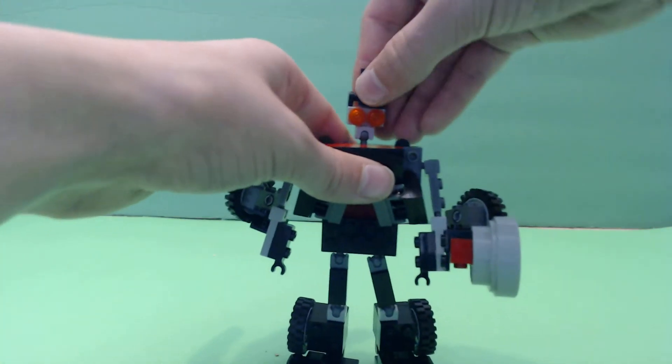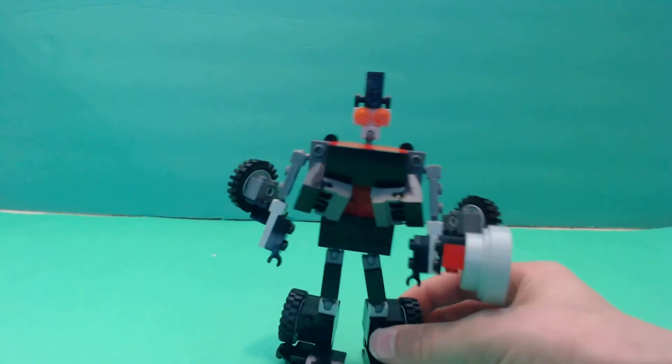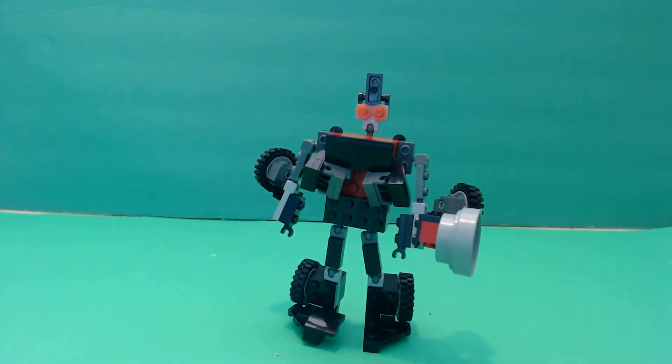And you flip his head around, and there is Dragster in his robot mode. And I think he is cool looking. He is kind of small, but I think he's cool.